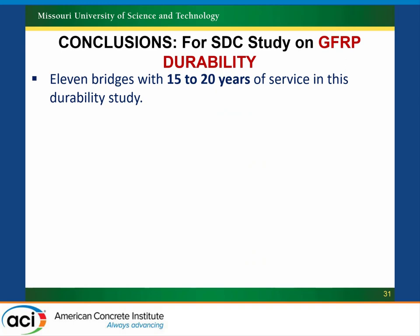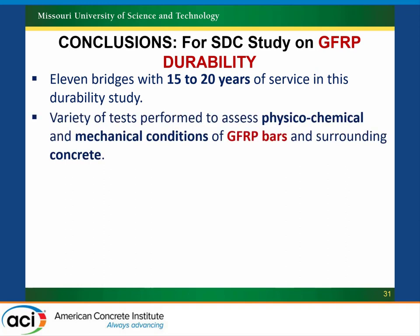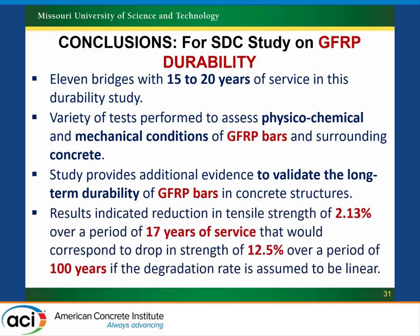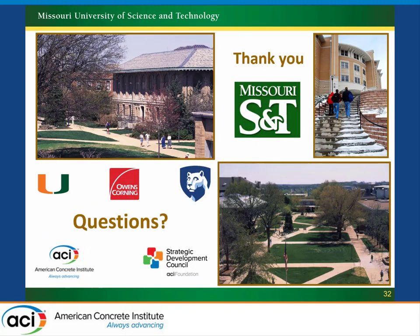In conclusions, we looked at 11 bridges examining the physical, chemical, and mechanical conditions of the bars. This helps validate the long-term performance of GFRP bars and gives owners and designers confidence to use these materials in bridge deck applications. After 17 years, tensile degradation was 2.13%, which would project to about 12.5% over 100 years. Currently, the C sub E environmental reduction factor used in the design standard is 30%. So even over 100 years, based on this data, things look very good.